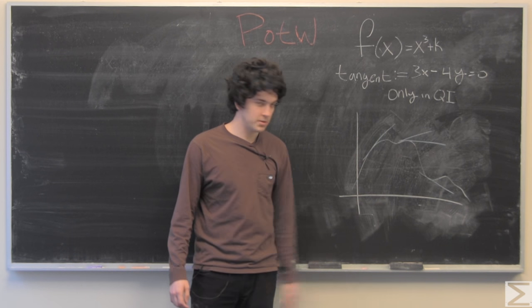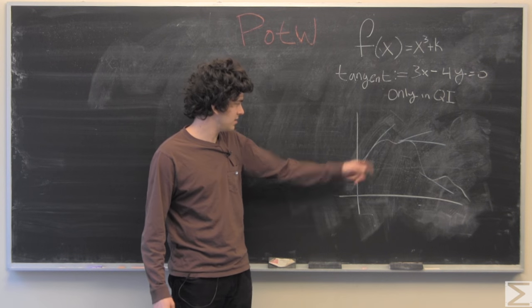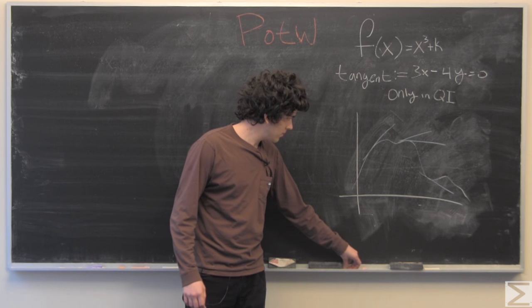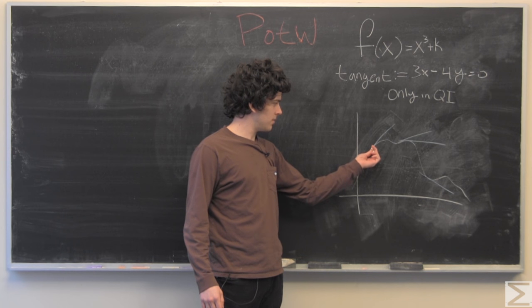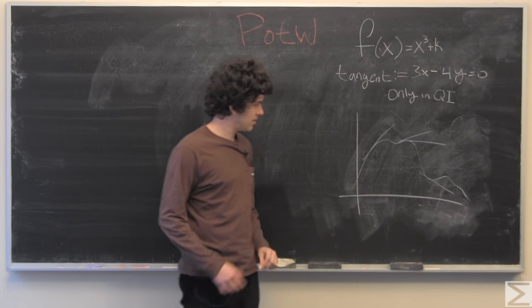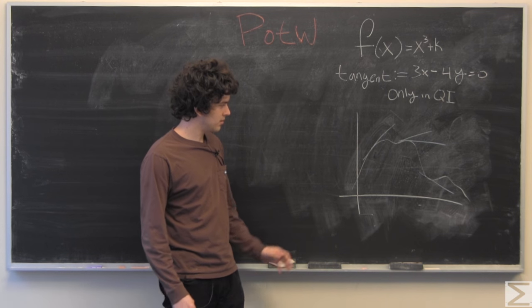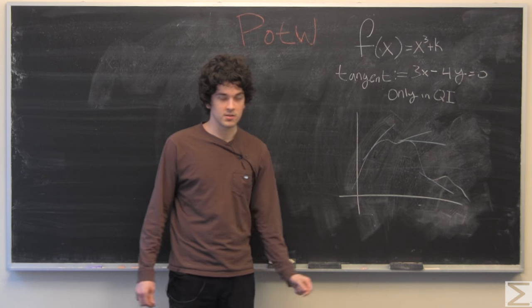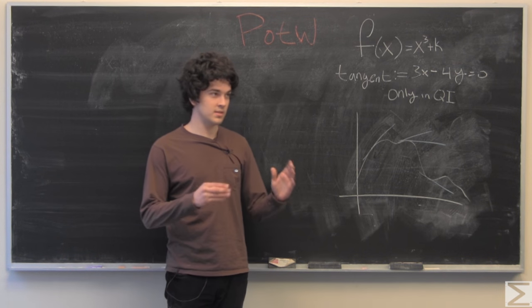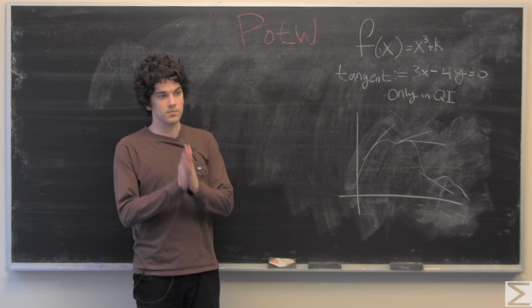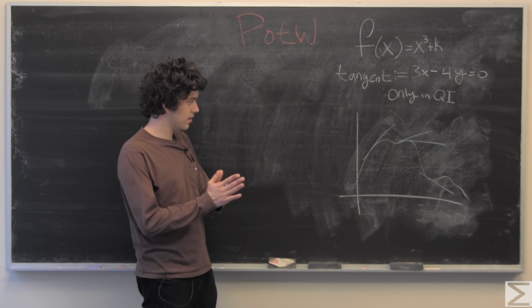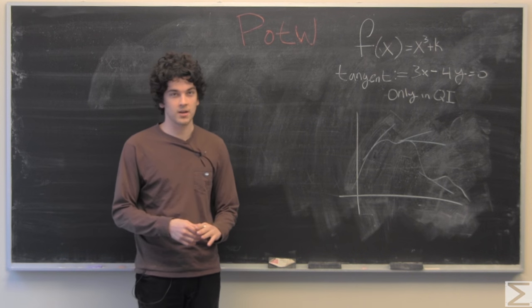Here are some random arbitrary function and this is the tangent line. One thing to notice is that the tangent line and the function itself are going to look very similar at some point, which is called local linearity.